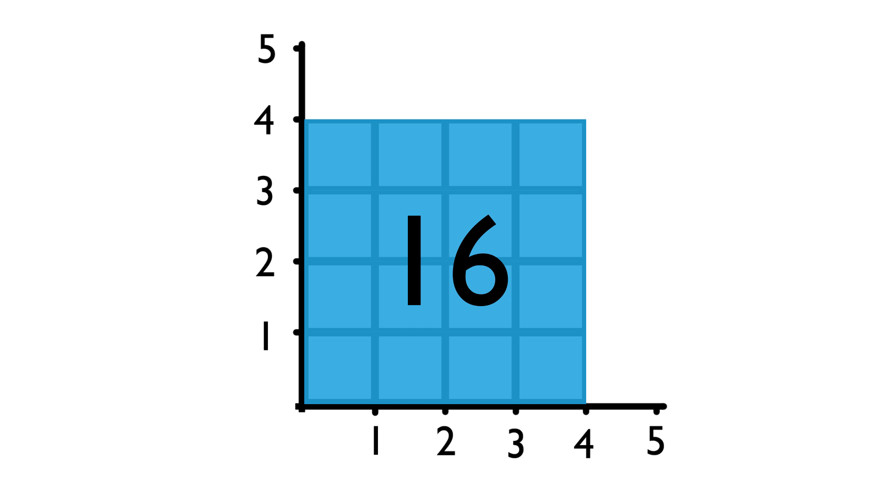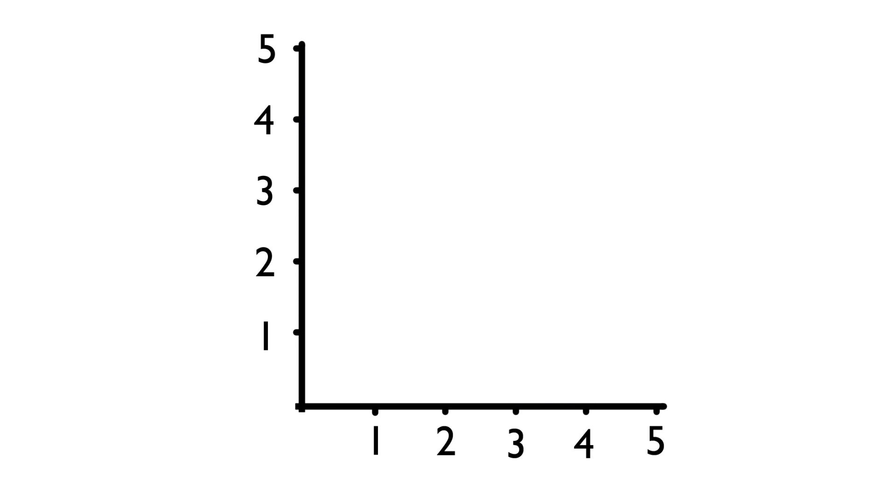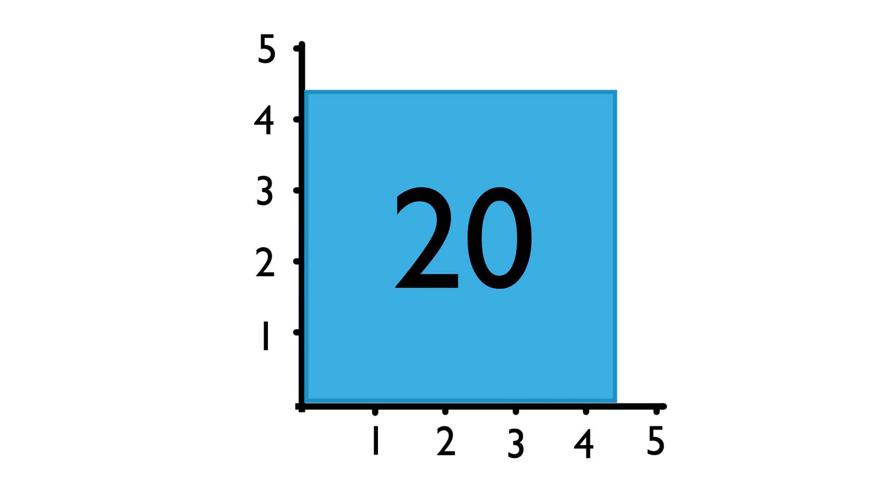Basically, when you do a square root of a number, let's say 20, you're saying, if I have a square with an area of 20, what's the length of one of the sides? In this case, it's 4.47 and so on.